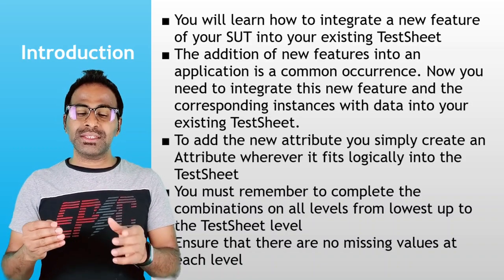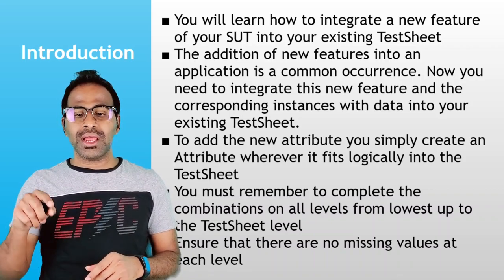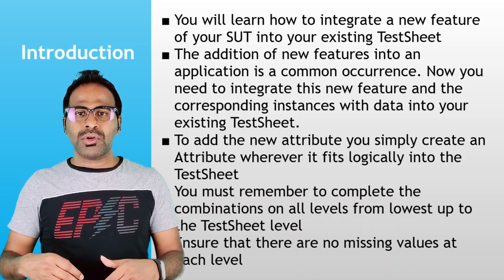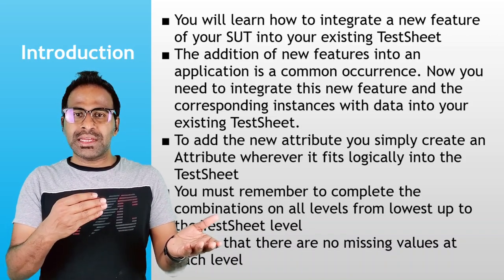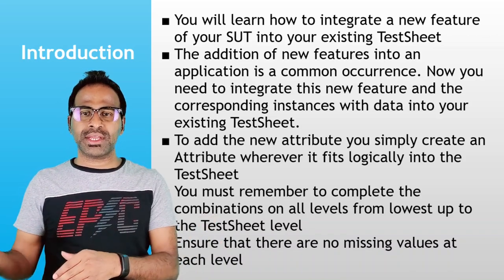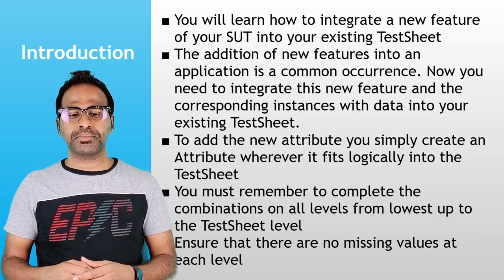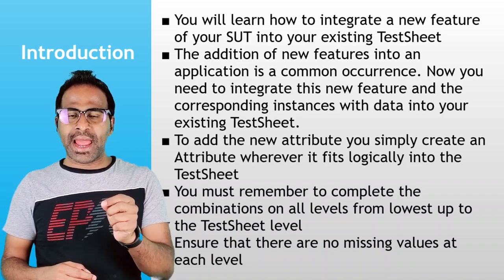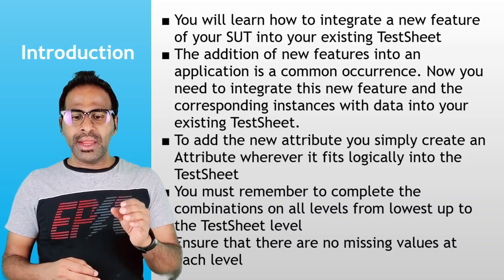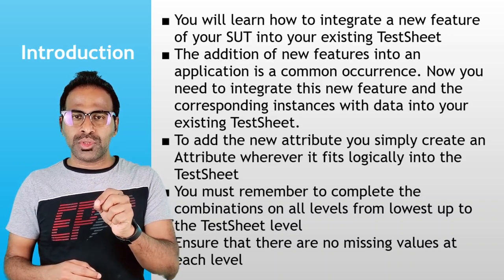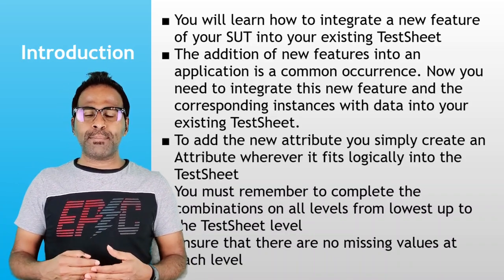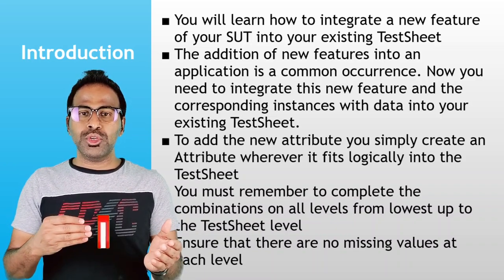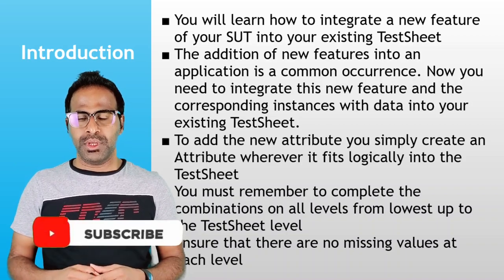You need to integrate the new feature and corresponding instances with data into your existing test sheet, because your application has changed and you have to adopt these changes in terms of instances. To add a new attribute, you simply create an attribute wherever it is logically applicable to the test sheet — creating new attributes applicable for your new feature.